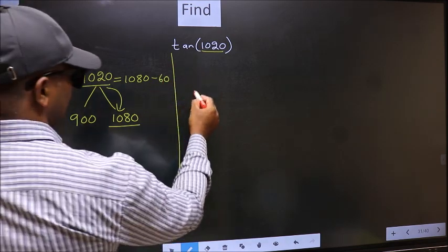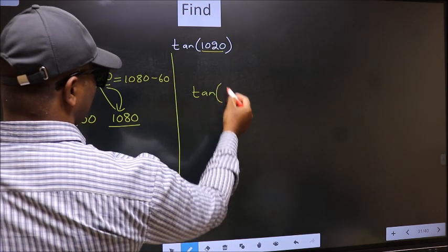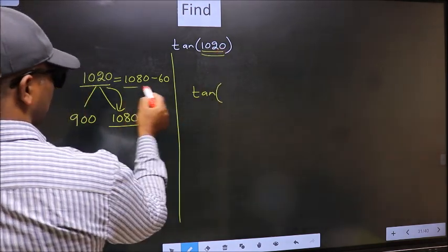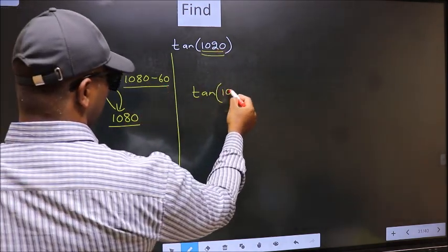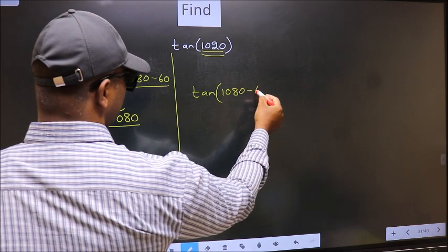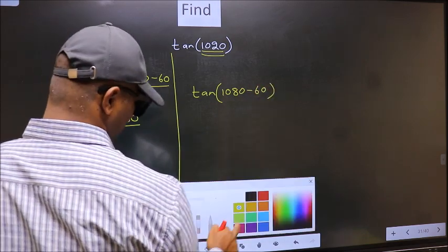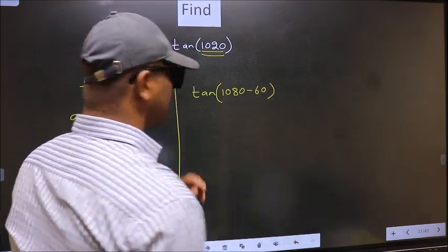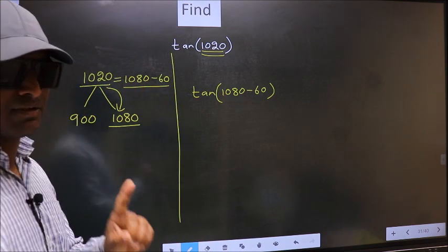So this will become tan. In place of this, we write this: 1080 minus 60. This is your step 1.